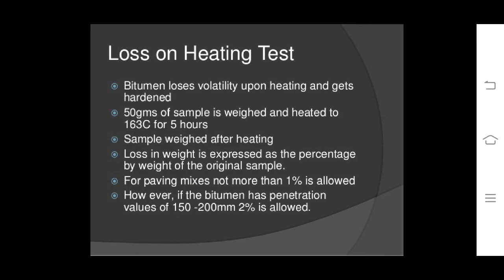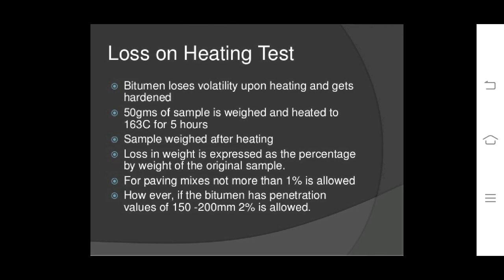Loss on heating test: bitumen loses volatility upon heating and gets hardened. 50 grams of sample is weighed and heated to 163°C for 5 hours, then weighed after heating. Loss in weight is expressed as a percentage by weight of the original sample. For paving mixes, not more than 1% loss is allowed; however, for bitumen with a penetration value of 150 to 200 mm, 2% is also allowed. We have studied about various properties of bitumen and tests conducted to check the quality of bitumen for use in road construction and building construction. Thank you.